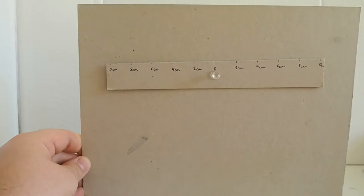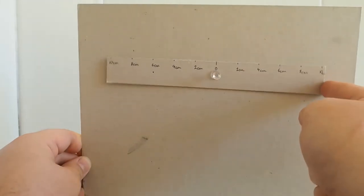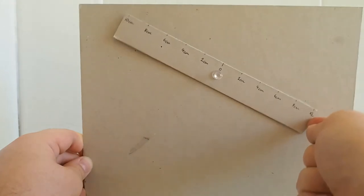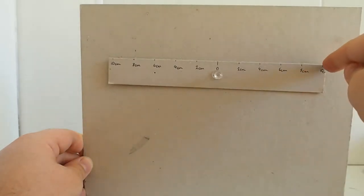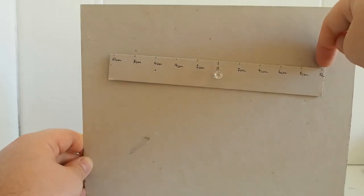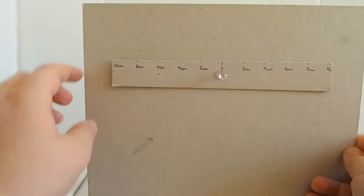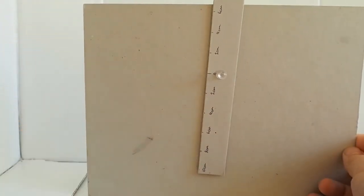So let's get a little bit of vocabulary sorted first. This pin here is our pivot, and this will move around the pivot. If we apply a force here downwards, it will move clockwise. But if we apply a force here downwards, it will move anti-clockwise.